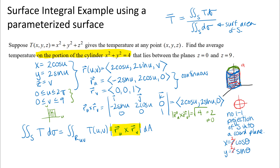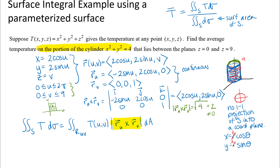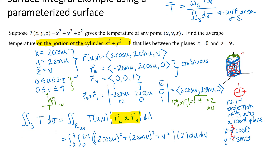Let's go ahead and set up this integral in terms of u's and v's. I have the temperature function x² plus y² plus z² with the surface equations for x, y, and z substituted in, so the temperature function is all in terms of u's and v's. Then I have the magnitude of the cross product of those partial derivative vectors, which is 2. Since I'm integrating in the uv plane, u on the inner integral goes from 0 to 2π and v on the outer integral goes from 0 to 9.